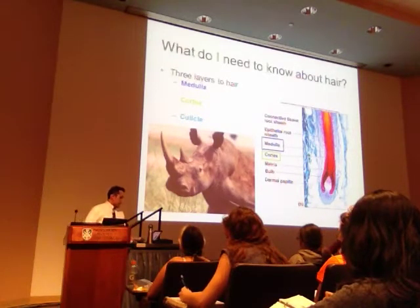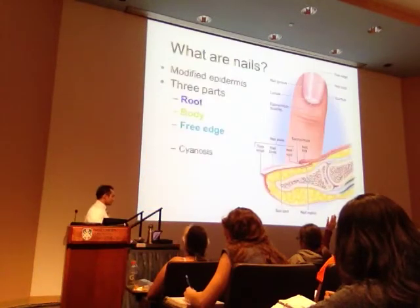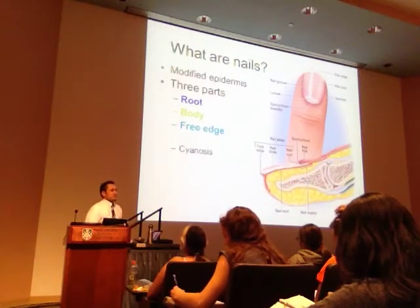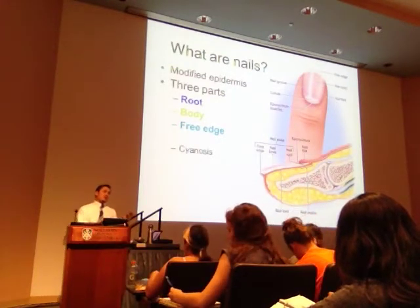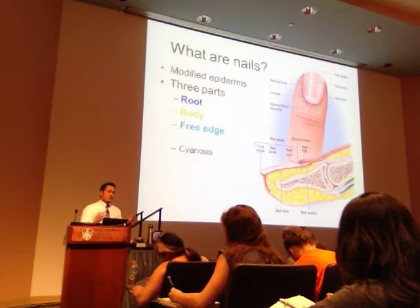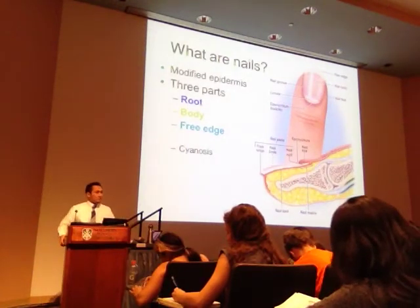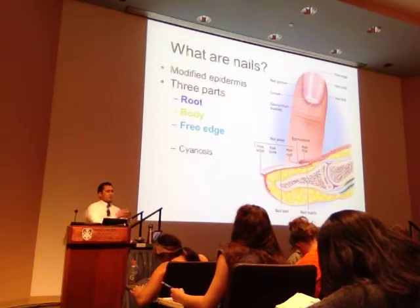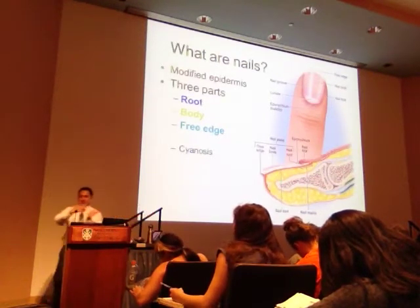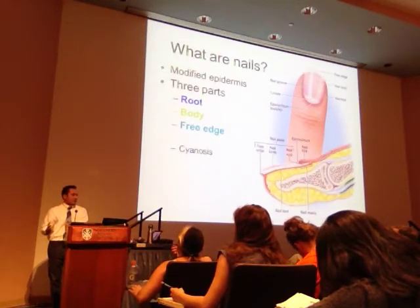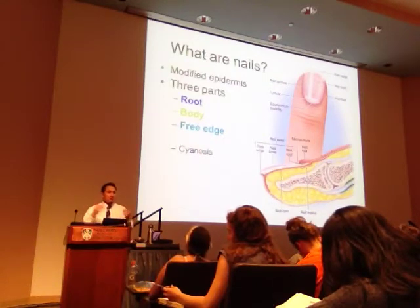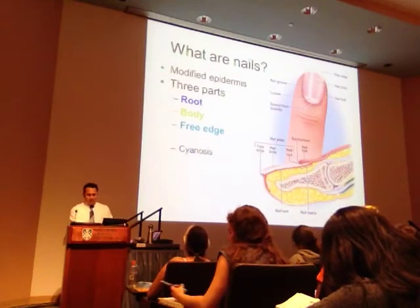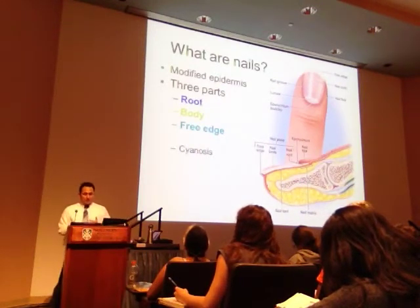Next up is nails. Nails are also sort of an extension of the epidermis. They only exist in certain parts of the body — on the digits, fingers, and toes. They're a modified epidermis, hard and keratinized. Hair is also a modified epidermis, but it's stuck in the dermal layer, so it doesn't have quite the same category as nails. Nails have three main parts: a root, the body, and the free edge.